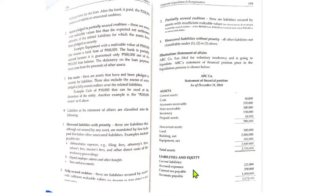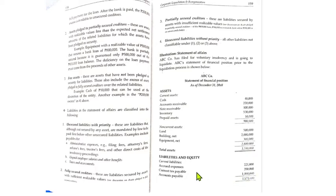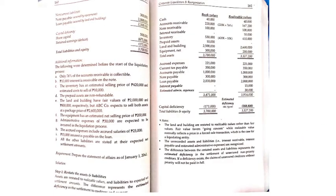Looking at the liabilities, there are accrued expenses, current tax payable, and accounts payable. We need to identify which are unsecured liabilities with priority. For accrued expenses, we cannot tell yet since the term is too general — there may be more detail in the additional information. Current tax payable is an unsecured liability with priority (taxes and assessments). Accounts payable has no special indicator, so it is likely unsecured liabilities without priority.